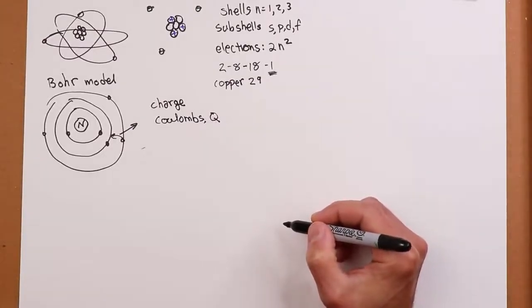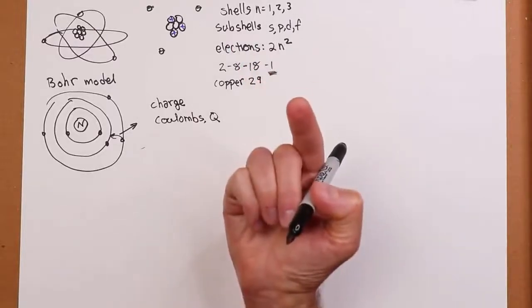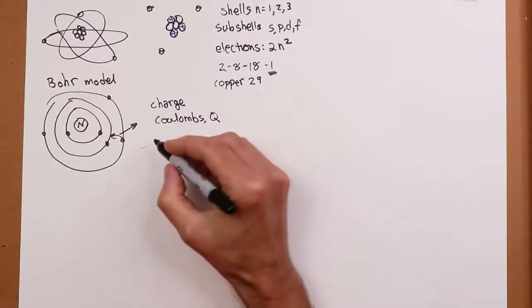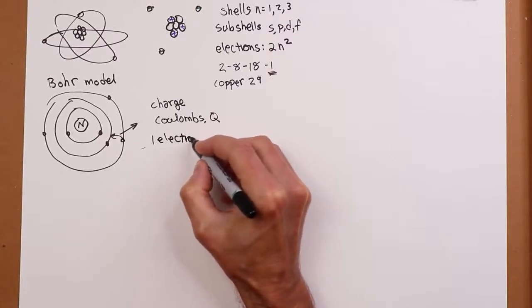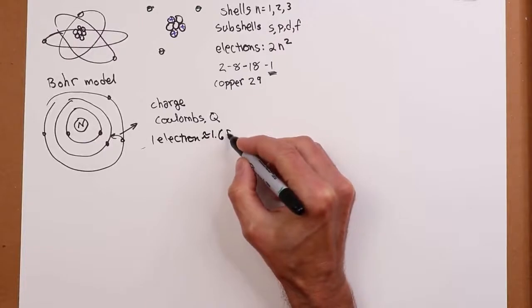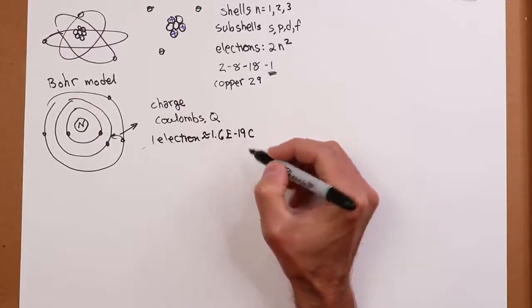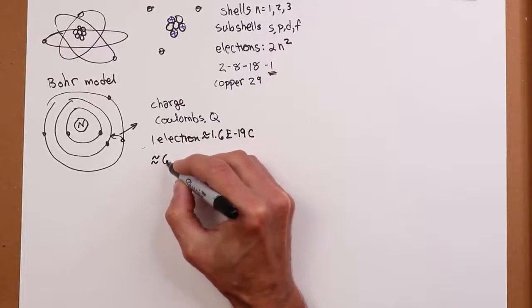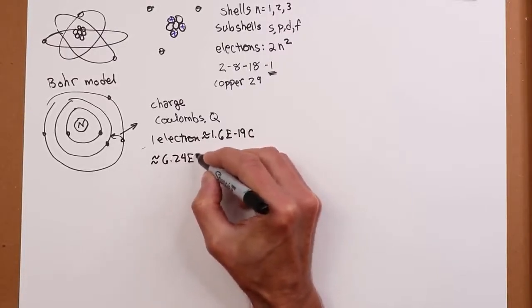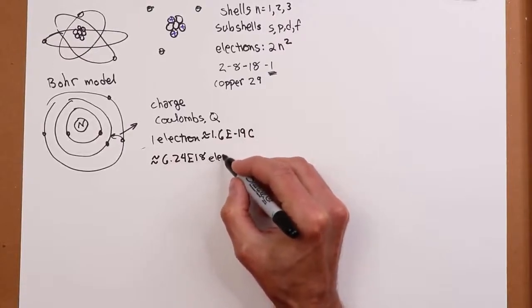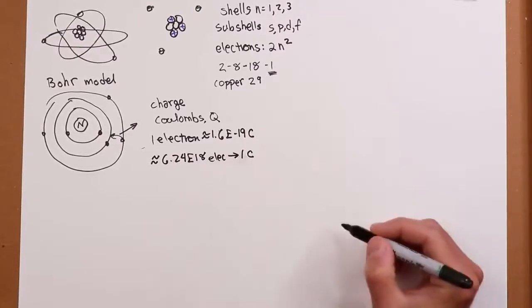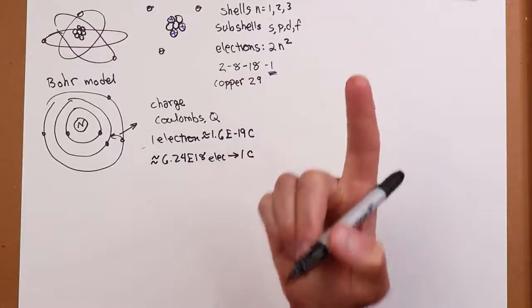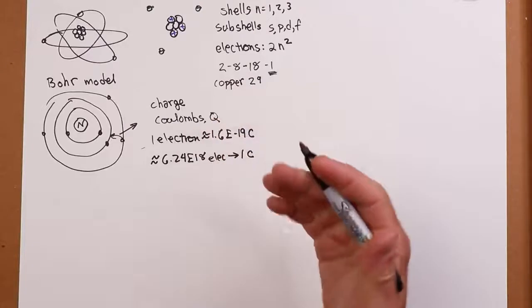The charge on one electron is tiny. Like, we're talking maybe around 1.6 times 10 to the minus 19th coulombs. That's pretty small. So it takes about, roughly, 6.24 billion billion electrons to get you one coulomb. Crazy, crazy tiny.